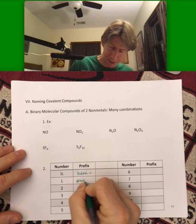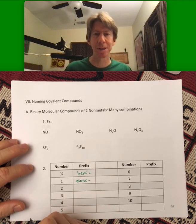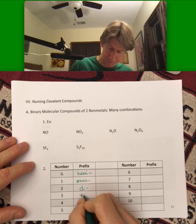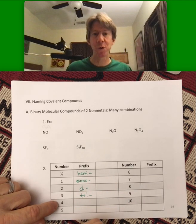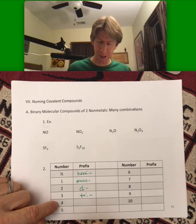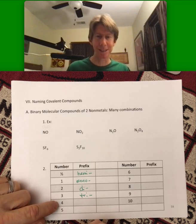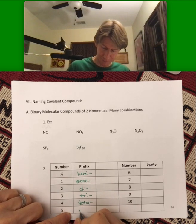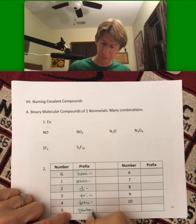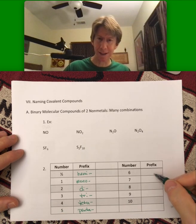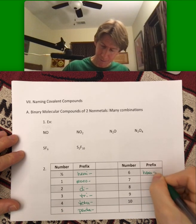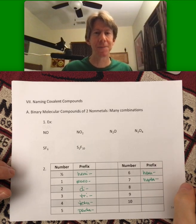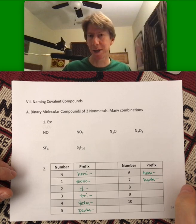One is mono. Two and three are di and tri. Four is where we get to the Greek numbering systems. Tetra. Penta. And then hexa and hepta. And finally, octa, nona, and deca.